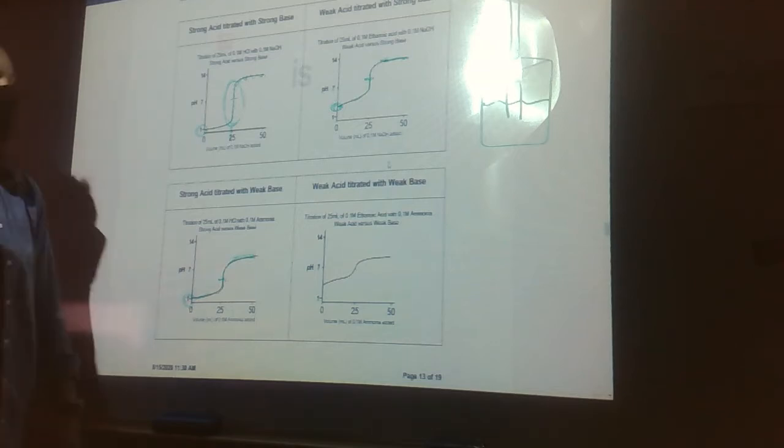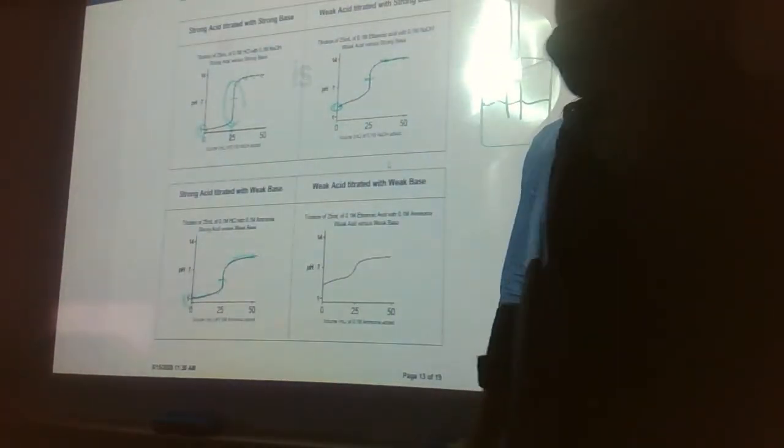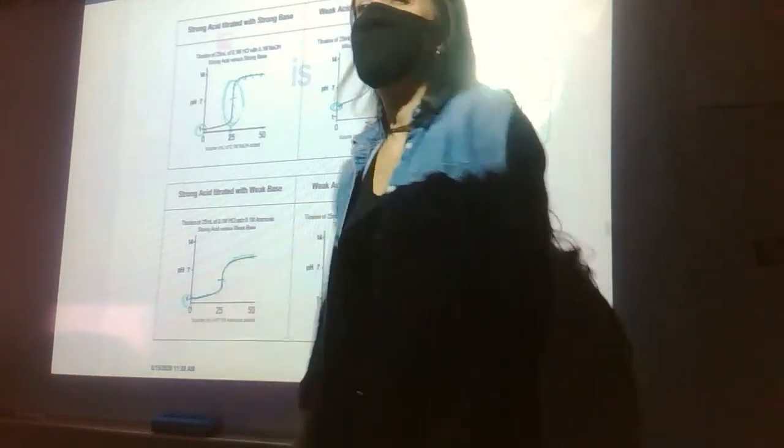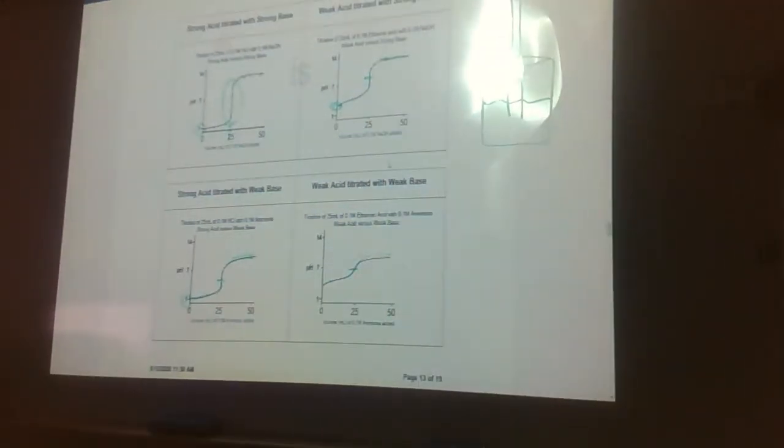The last one is a weak acid with a weak base. Still winds up at 7, but it is not very pronounced. You won't see anything this complex on the AP test. It's not pronounced enough for you to be able to tell where the equivalence point is.